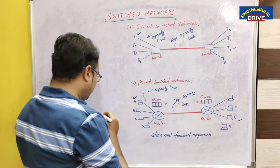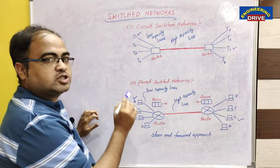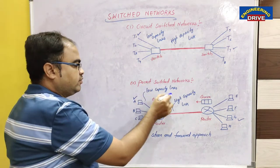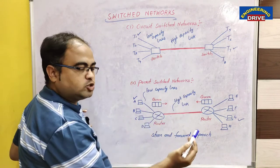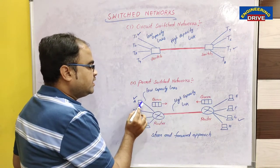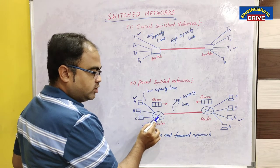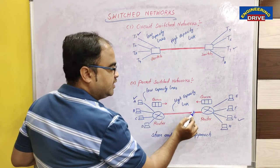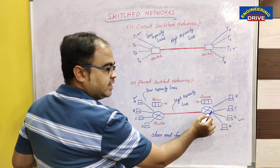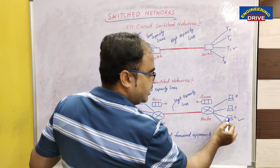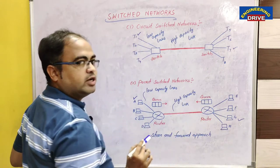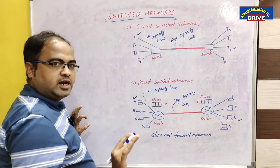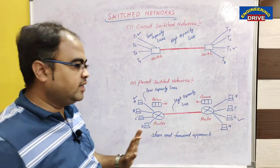Let's say computer A wants to communicate with computer G. The data will be transmitted in the form of packets — we are talking about packet switch networks. Computer A sends the required data in the form of packets to the router. The router sees that the high capacity link is free, so it transmits the data to the router at the receiving side, which then selects computer G and passes the data to it.